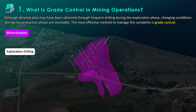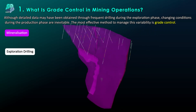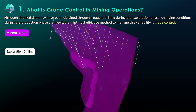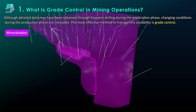Although detailed data may have been obtained through frequent drilling during the exploration phase, changing conditions during the production phase are inevitable. The most effective method to manage this is grade control.